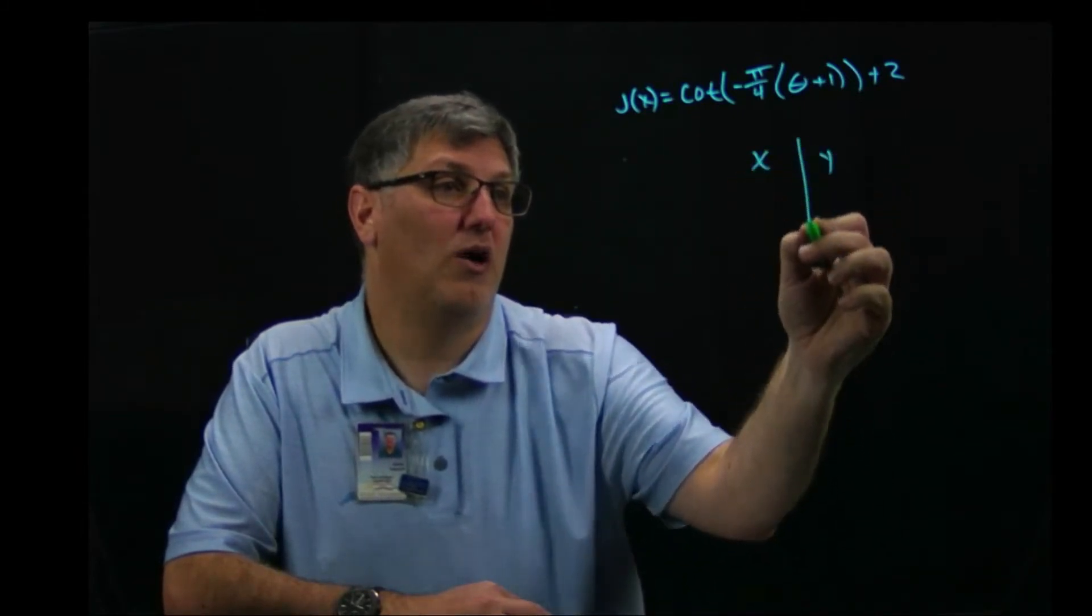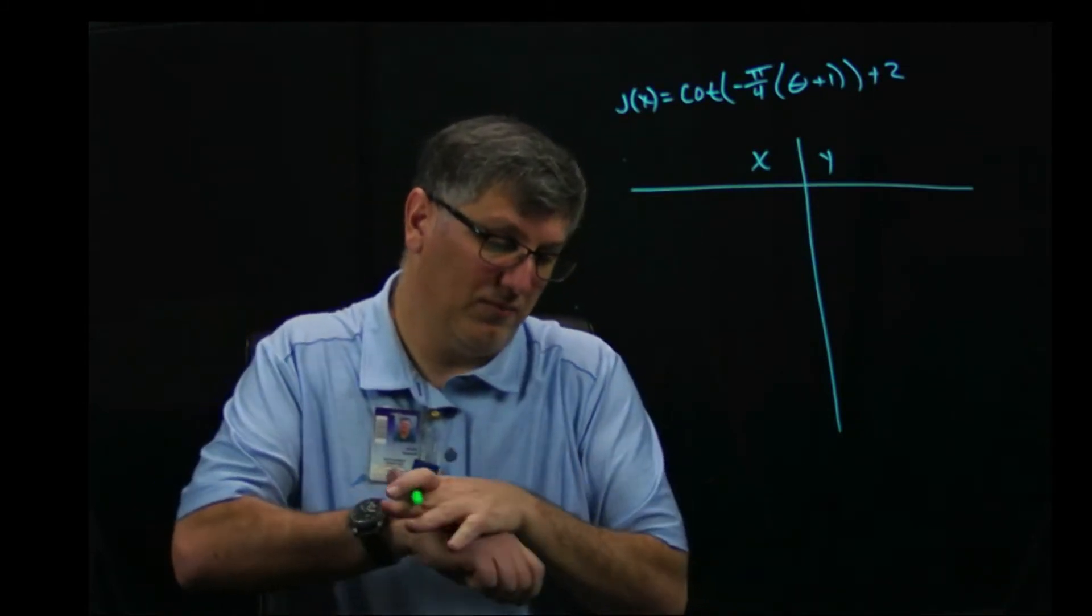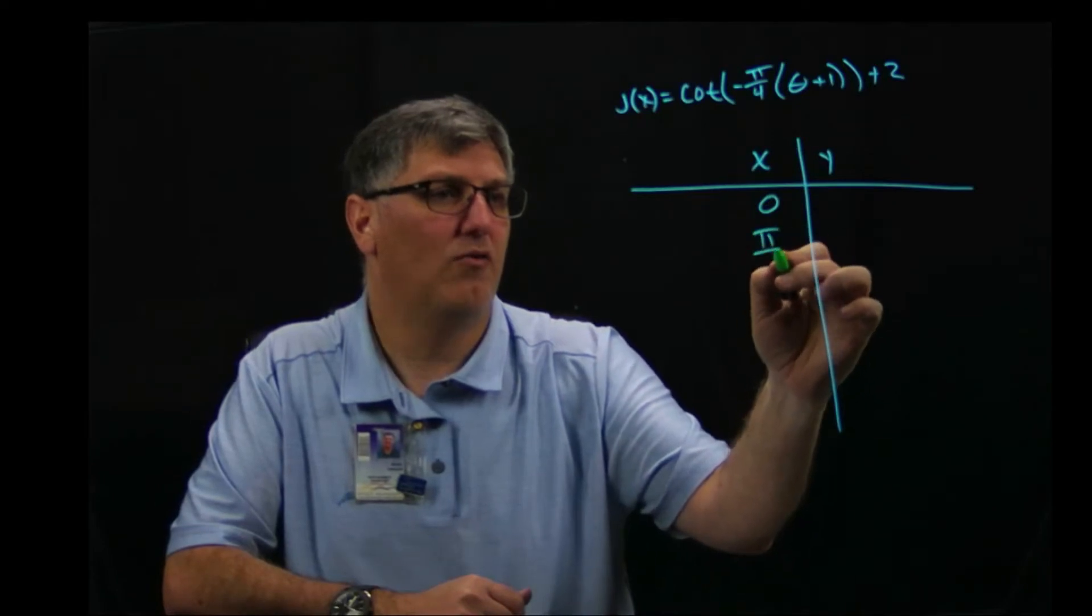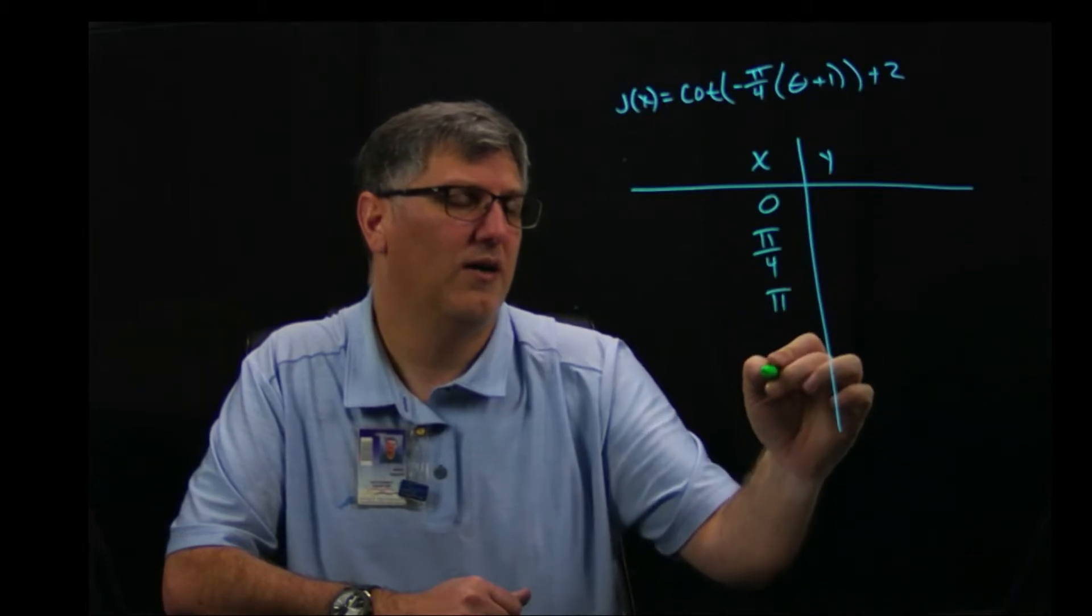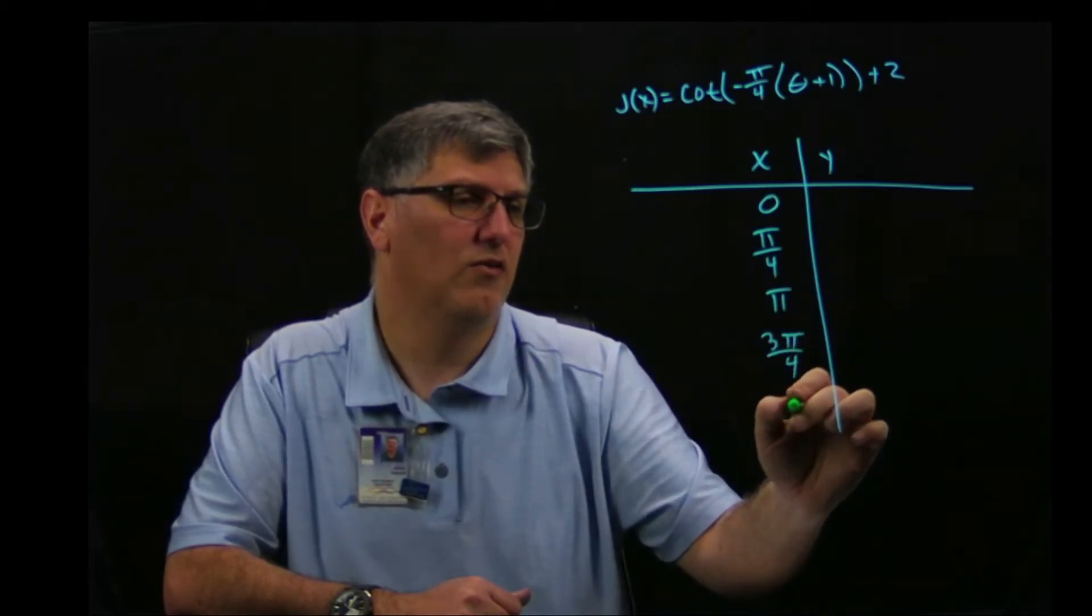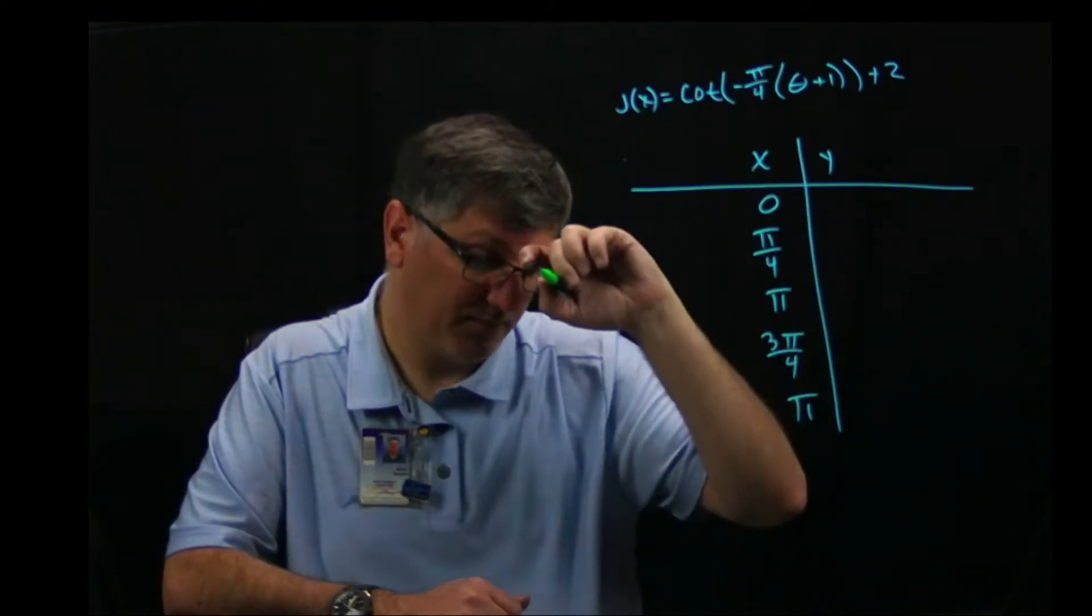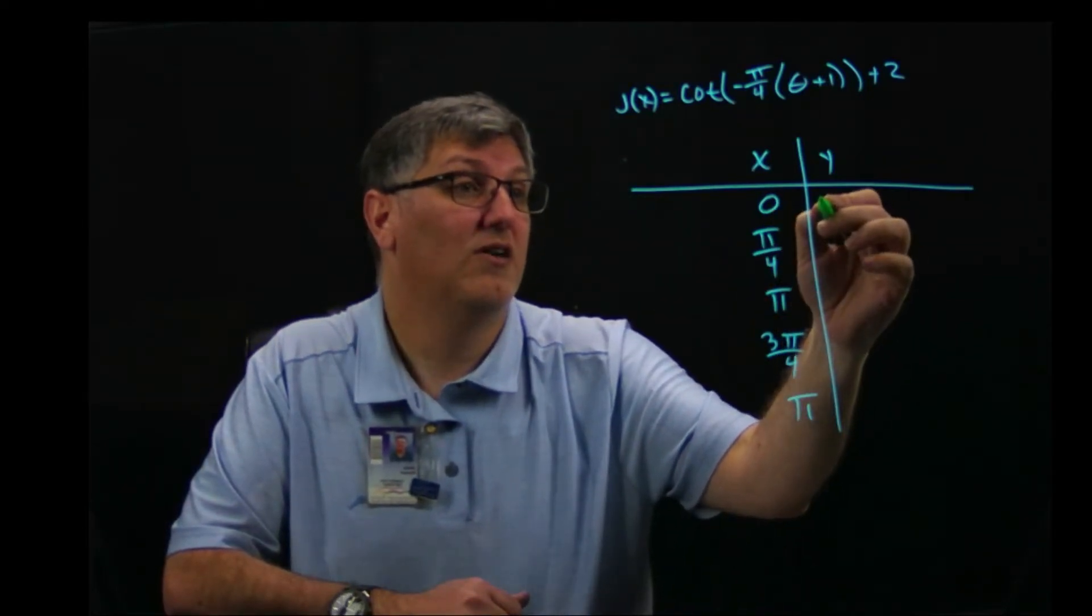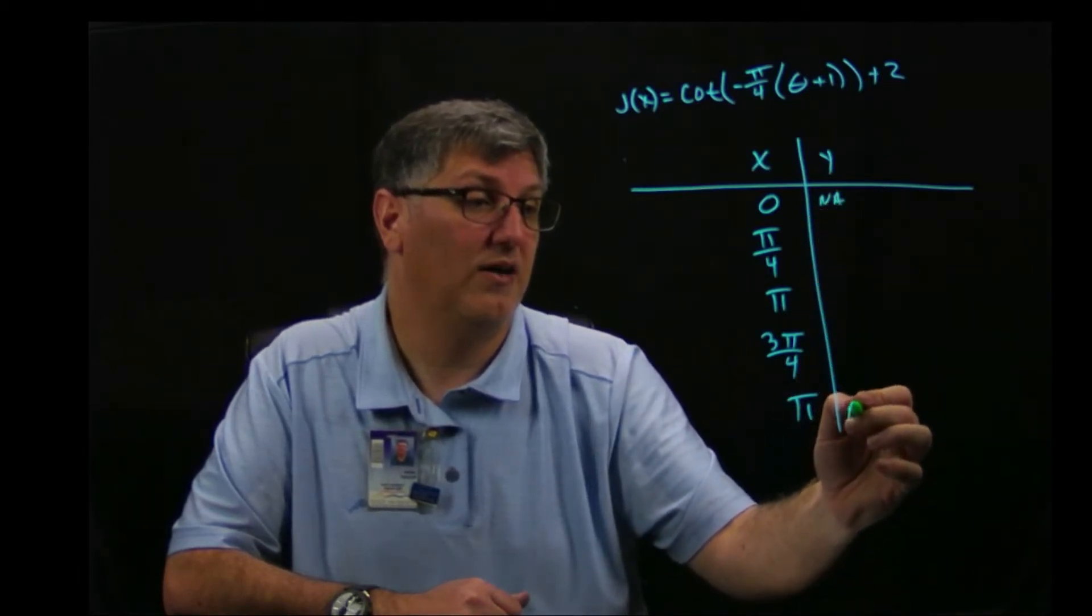Here's my x, here's my y. I want to pick five points between the periods here, so I'm still going to use zero, pi over four, pi over two, let's do three pi over four, and then let's do pi. All right, well, cotangent at zero does not exist. Same thing at pi, it does not exist.